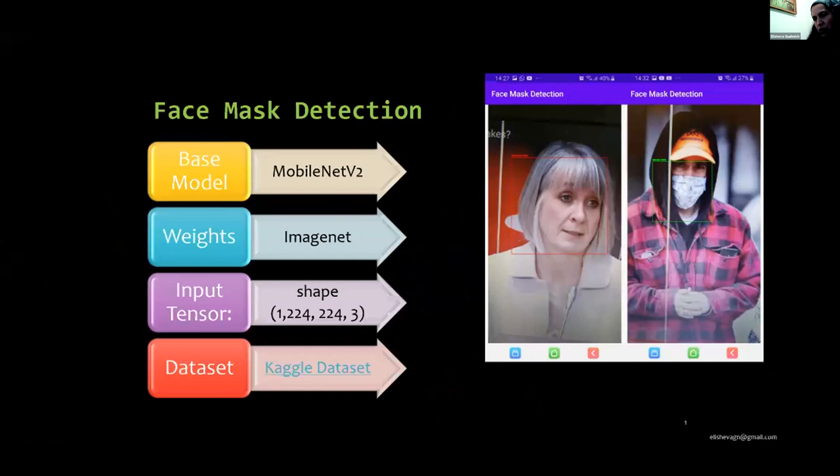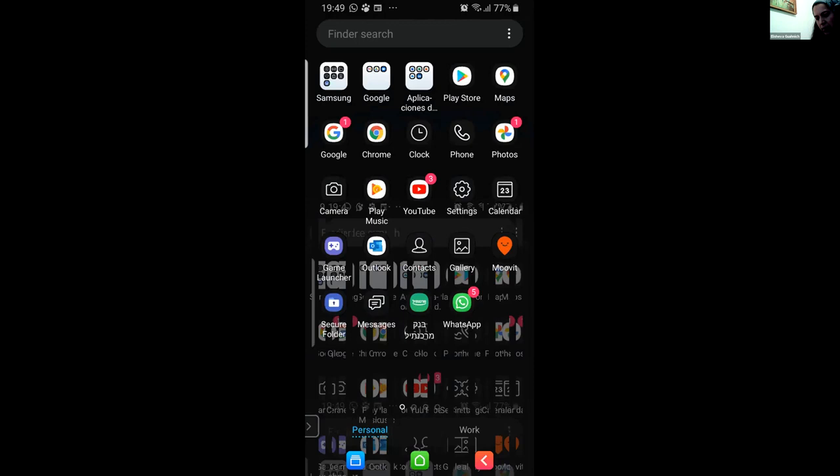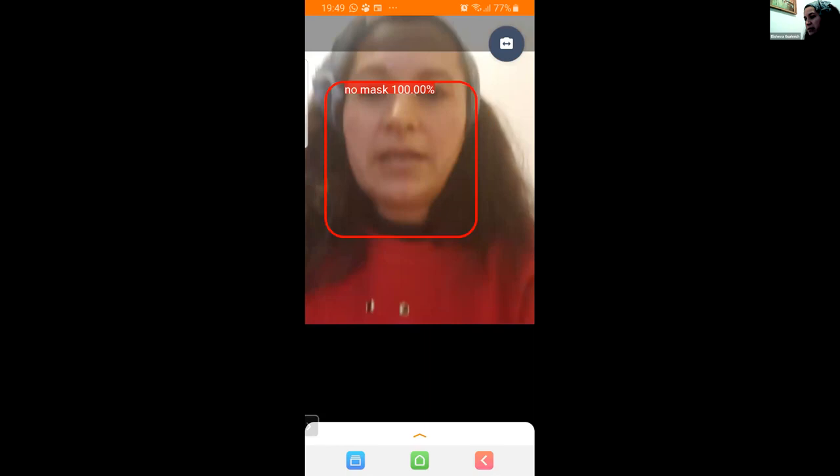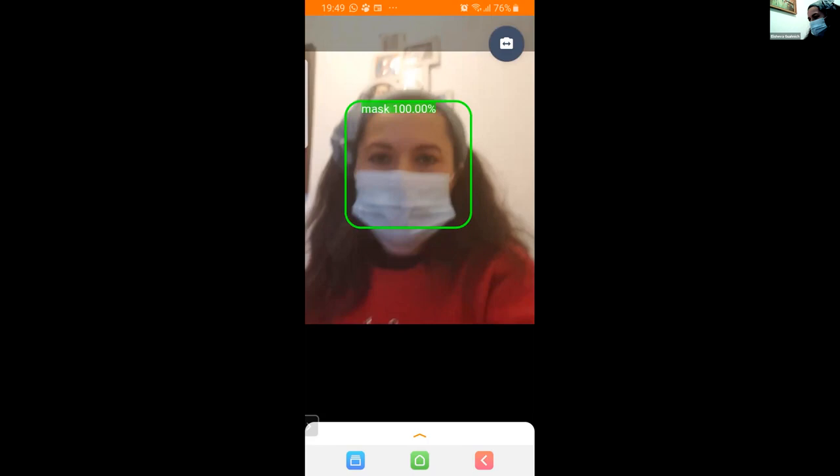We will start with face mask detection. The architecture model is a MobileNet version 2, pre-trained on ImageNet dataset. This is running on my cell phone. Now we are detecting the mask.